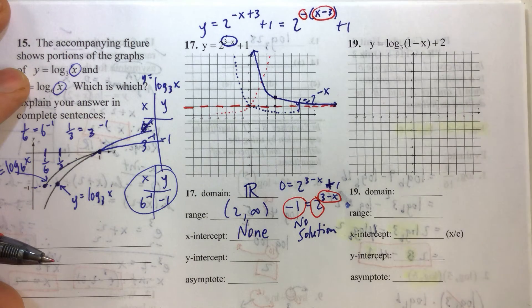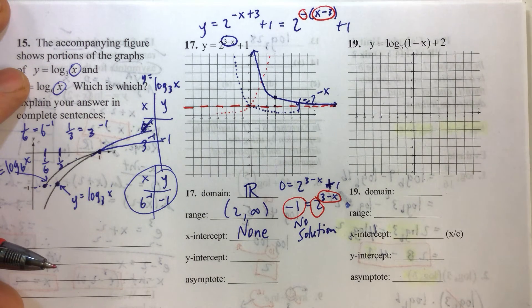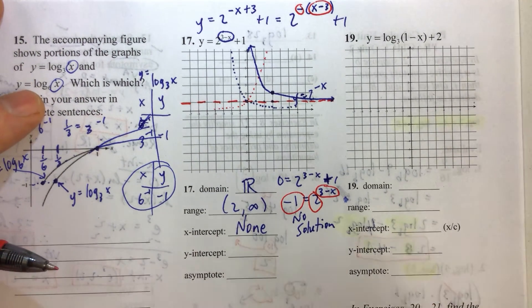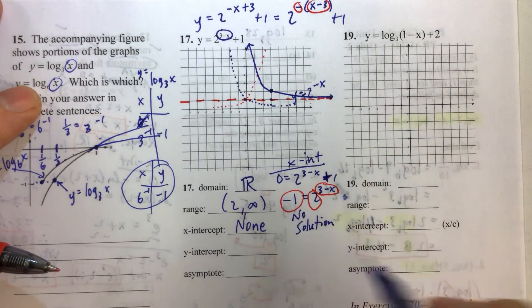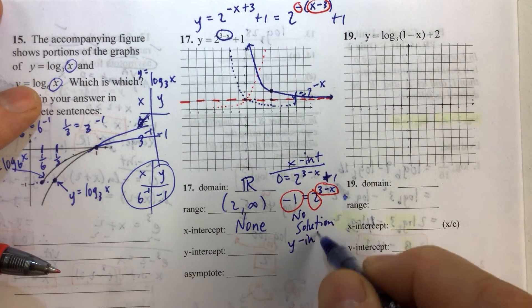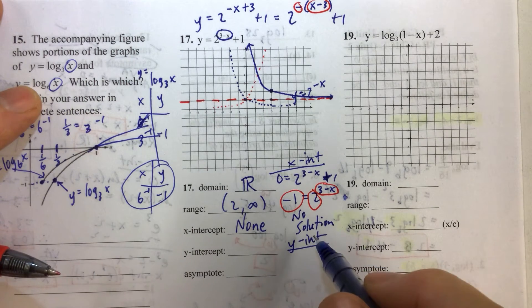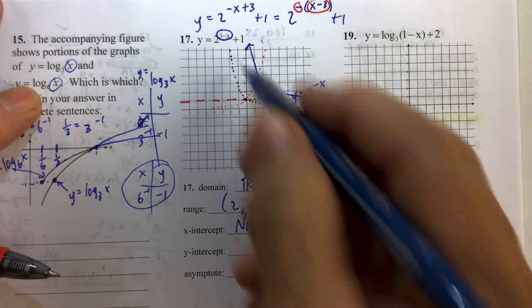Now our y-intercept. To find our y-intercept, we want to let x equal 0. So we should have a pretty high number. The number should be pretty big, so hopefully we'll get a big number.